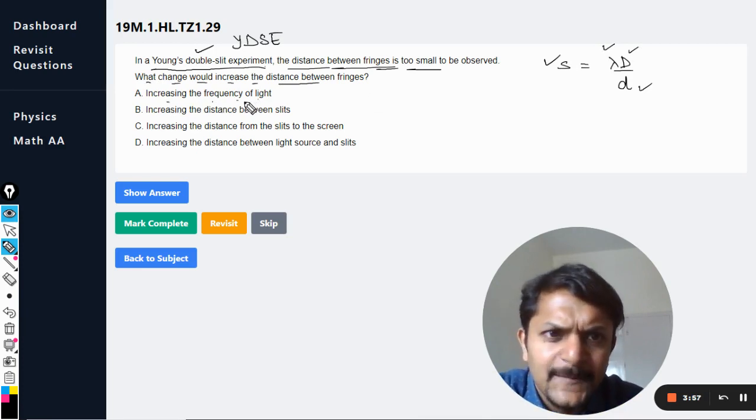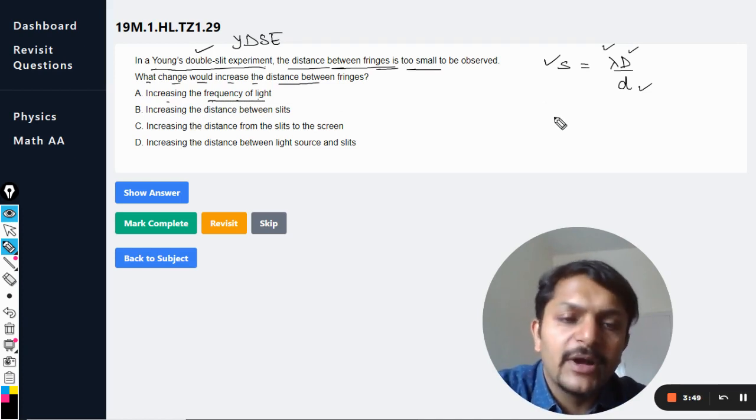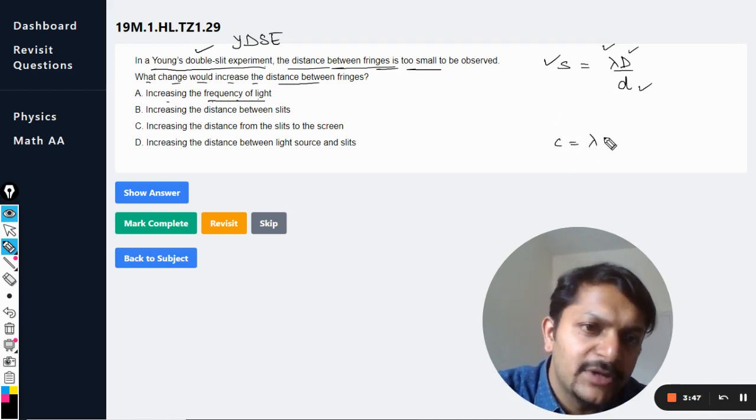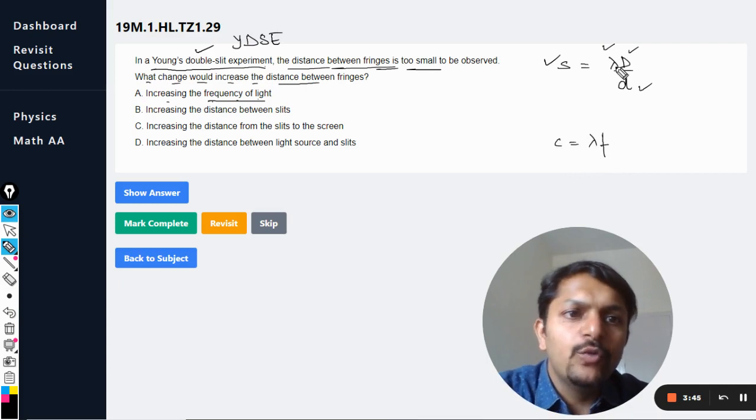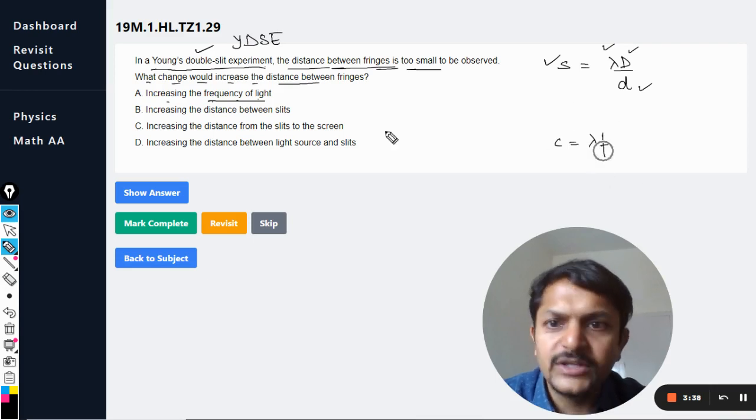Increase the frequency of the light. Okay, so all of the lights will be moving at the same speed because all of them are electromagnetic waves. So c equals lambda into f. If you want this lambda to increase, you have to decrease the frequency because they are inversely proportional. So frequency should be decreased, and so A is wrong.